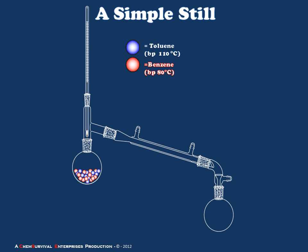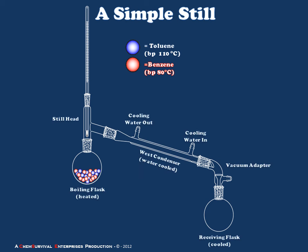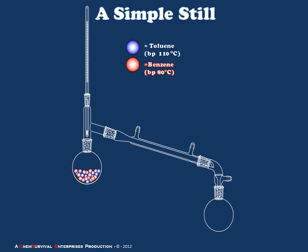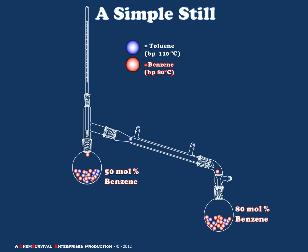Shown here is a schematic of a simple distillation apparatus like the one discussed in our previous lecture. Recall what each part is and its purpose. If we build a simple still, charging the boiling flask with 50 mole percent benzene and toluene, we channel the vapor into another region of the glassware, condensing it with a jacket of cold water. We expect the accumulating distillate to be 80 mole percent benzene, as predicted by Raoult's, Dalton's, and Ideal Gas Laws.